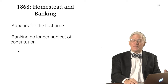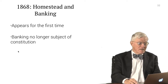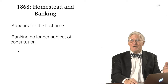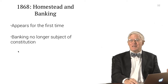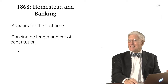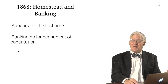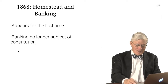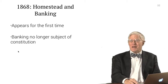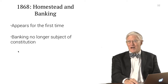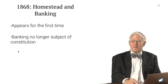The 1868 Constitution also contains the first reference to homestead, and banking was dropped as a separate article — it was no longer the great subject of struggle in national politics. By this time, bankers and ministers of the gospel were actually allowed to hold office. Whether that was a good thing or bad, I leave you to decide.